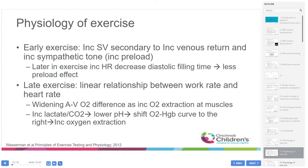In early exercise, the main factor is increased preload, occurring by increased stroke volume secondary to increased venous return and sympathetic tone. Later in exercise, as heart rate increases, diastolic filling time decreases, and preload has less effect. Late in exercise, there's a linear relationship between work rate and heart rate, resulting in widening of the AVO2 difference with increased oxygen extraction at the muscles. As lactate and CO2 increase, the lowered pH shifts the oxygen-hemoglobin dissociation curve to the right, increasing oxygen extraction.